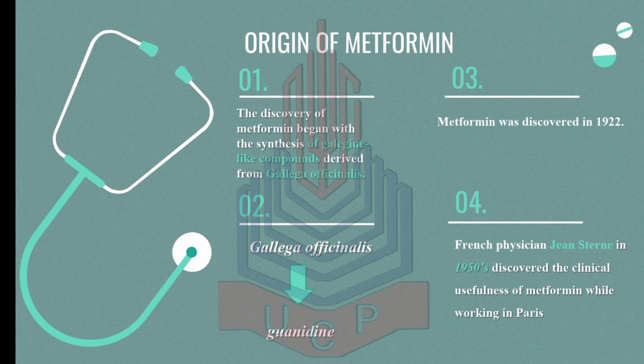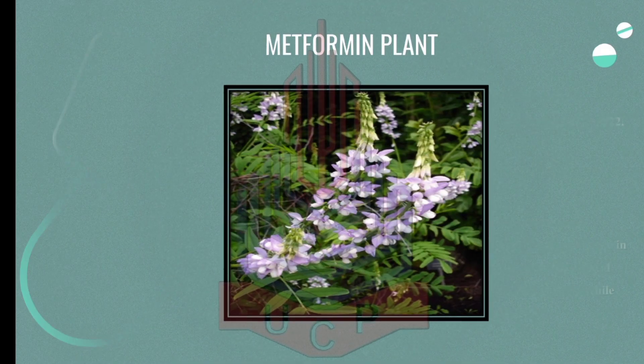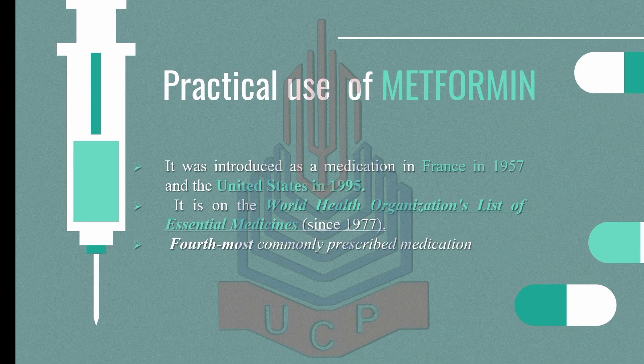The discovery of metformin began with the sciences of a galegine-like compound derived from Galega officinalis. Metformin was discovered in 1922. French physician Jean Stern, in 1950, discovered the clinical usefulness of metformin while working in Paris. The derivative guanidine is also derived from Galega officinalis. Metformin was introduced as a medication in France in 1957.